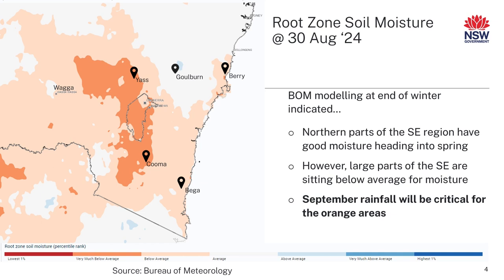We've zoomed in on that root zone soil moisture map into the southeast region and what we can see is that there is an area around Goulburn that is actually showing really good soil moisture heading into spring — around that long-term average soil moisture at the end of winter, which is a really great position to be in. Unfortunately, a large part of the region is sitting below average for soil moisture, particularly areas to the west of the ACT and heading down through the ACT and onto the Monaro. For those orange shaded areas, particularly the really dark orange areas, September rainfall is going to be really important and producers will be closely monitoring rainfall forecasts in the coming weeks.